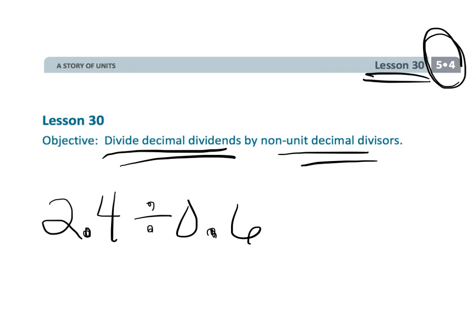Right here is our decimal dividend, and here's our non-unit decimal divisor. This lesson we are going to be moving closer to that standard algorithm, because in the previous lesson, Lesson 29, it was a little tricky to understand how many of these go into this, approaching it from a purely number sense point of view. Now we're going to be moving towards that standard algorithm. So let's get going.